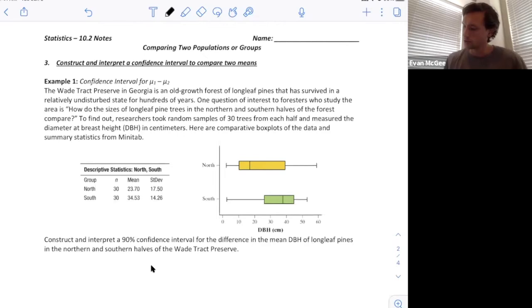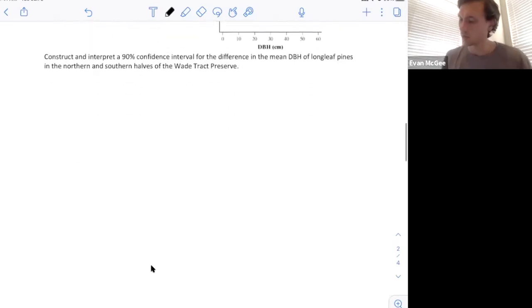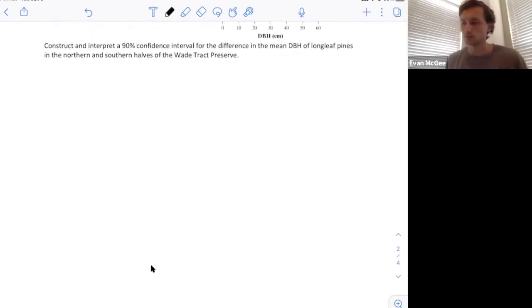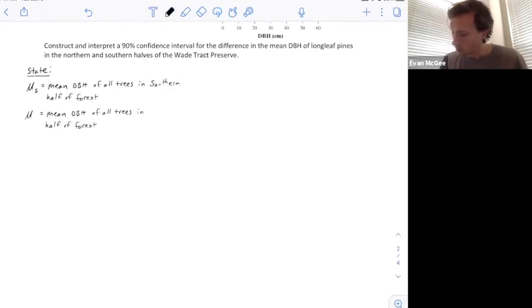First, we're going to state what we're trying to capture with our confidence interval. We want to estimate the mean difference between the south and the north with 90% confidence, where μ_s represents the mean DBH of all trees in the southern half of the forest, and μ_n represents the mean DBH of all trees in the northern half of the forest.